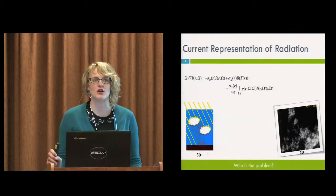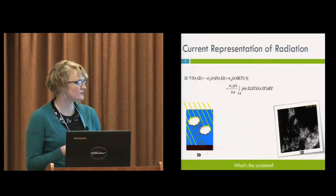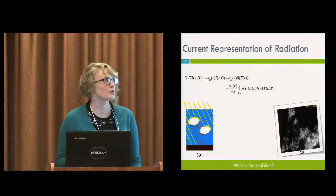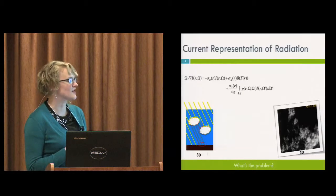So how are we currently representing radiation in our most commonly used models? Well, we know that radiation is allowed to move freely in the atmosphere in the real world, and I'm kind of representing that here in this cartoon. You can imagine the sun coming in from this direction.